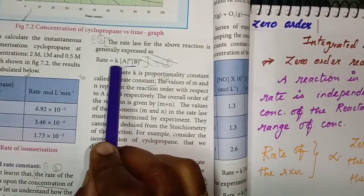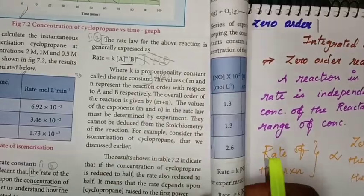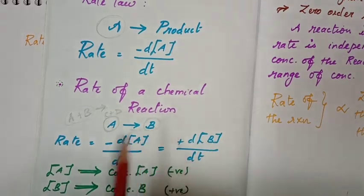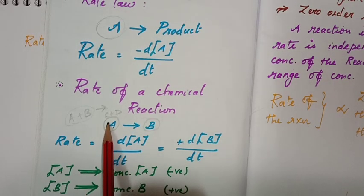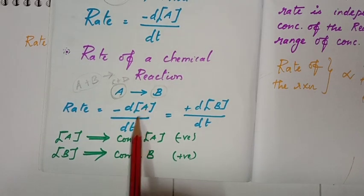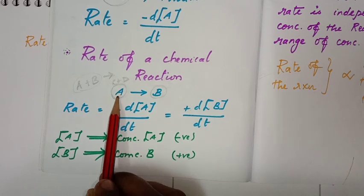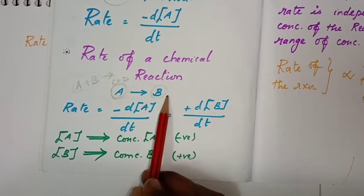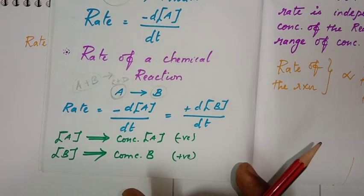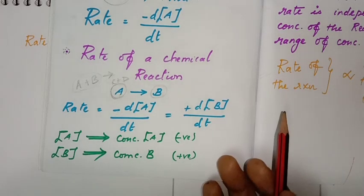The rate of a chemical reaction is equal to the change in concentration of any one of the reactants or products per unit time. The minus symbol indicates a decrease in concentration of A with respect to time, while the plus symbol indicates an increase in concentration of B with respect to time.